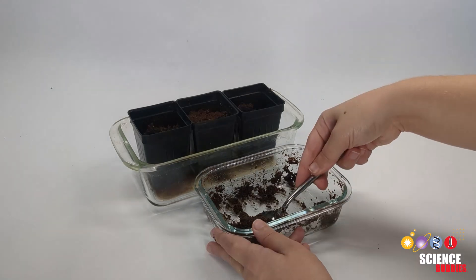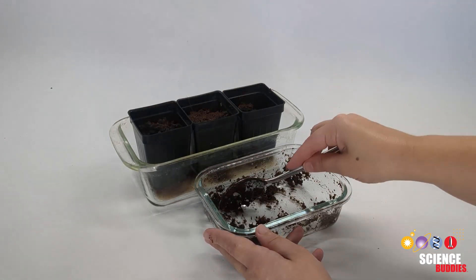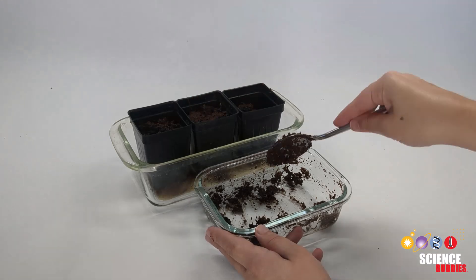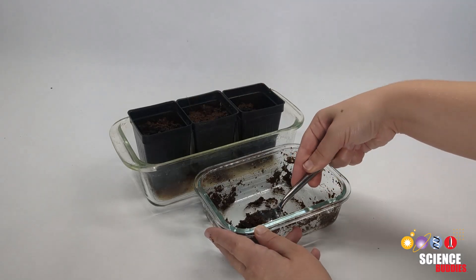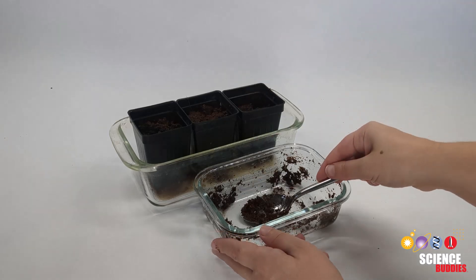Cover the seeds from each container with a thin layer of coconut husk. Check and water your plants daily. Now you can observe how different upcycled paper products compare to a commercial fertilizer.